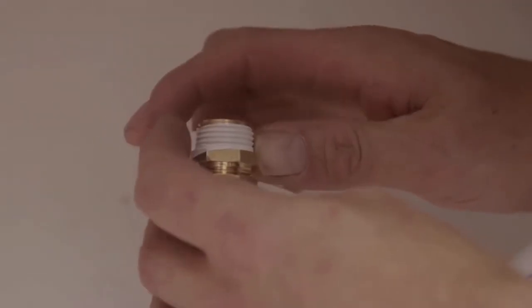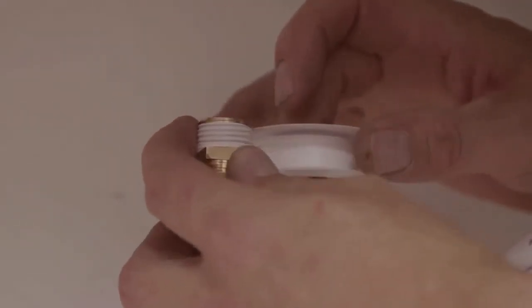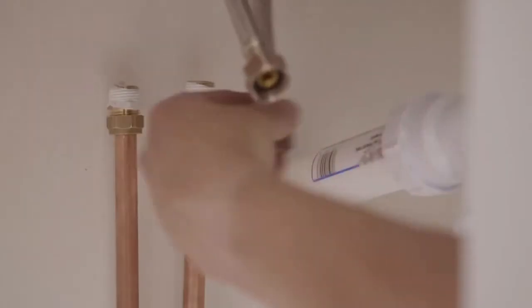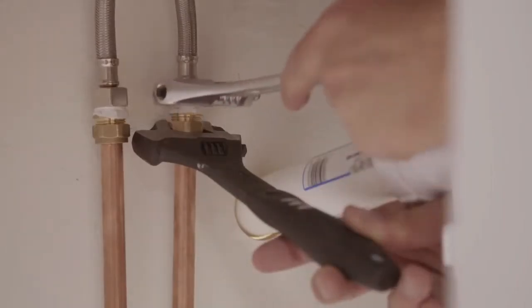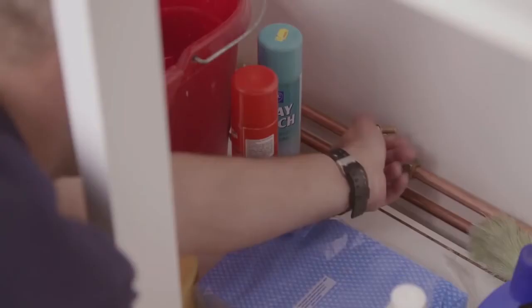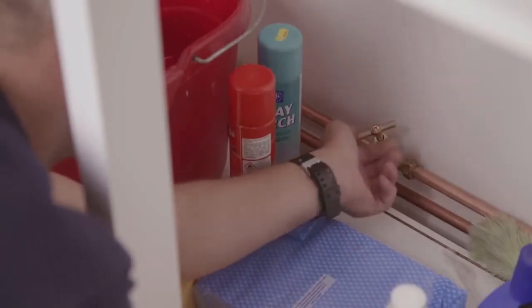Be sure to wrap the tape in the opposite direction to the thread on the pipe, so it doesn't unravel as you tighten up the nut. Once you have reconnected the tap, turn the water back on at the supply.